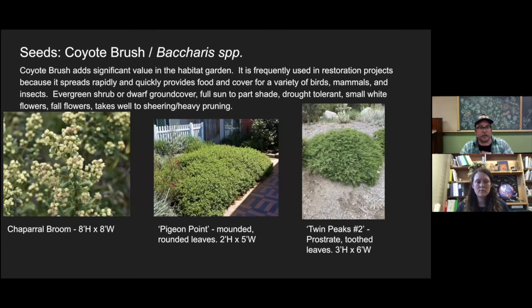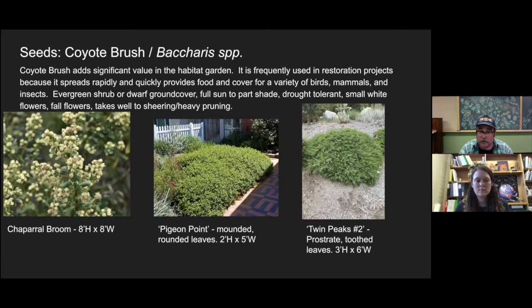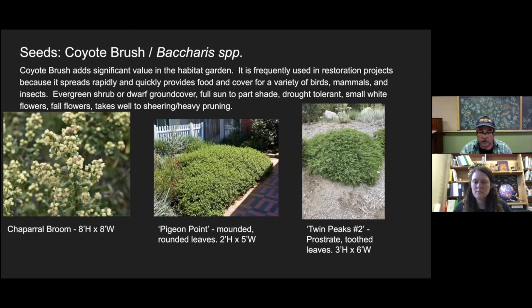Baccharis species — coyote brush. My colleague Patty Sue said you have to talk about Baccharis. Coyote brush has significant value in the habitat garden — it's frequently used in restoration projects because it spreads rapidly and quickly provides food and cover for a variety of birds, mammals, and insects. Evergreen shrub or dwarf ground cover, full sun to part shade. Small white flowers in the fall, and it takes well to shearing or pruning — could be good along a pathway. Pigeon Point and Twin Peaks are two very popular cultivars. We have nice specimens in the cultivar garden.